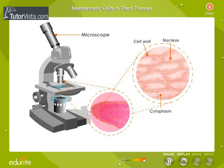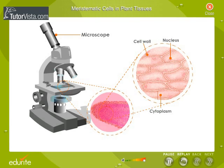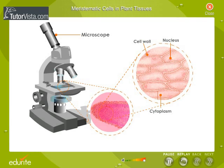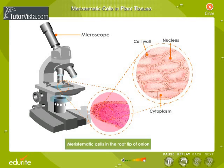Locate the thin-walled cells full of cytoplasm a little above the actual tip of the root. Note the large nucleus. These thin-walled cells in plant tissues are meristematic cells.